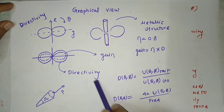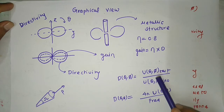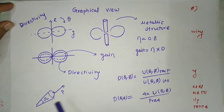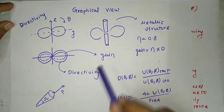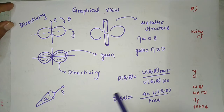Recall that directivity is the ratio of radiation intensity of the test antenna to radiation intensity of the reference antenna in a particular direction. Radiation intensity is the power coming out of a solid angle in a particular direction — power per unit solid angle in a particular direction. This formula was deduced in the directivity lecture.